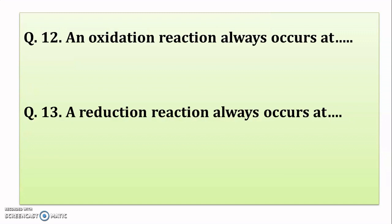An oxidation reaction always occurs at the anode — we have seen this in the fifth chapter on corrosion. A reduction reaction always occurs at the cathode.